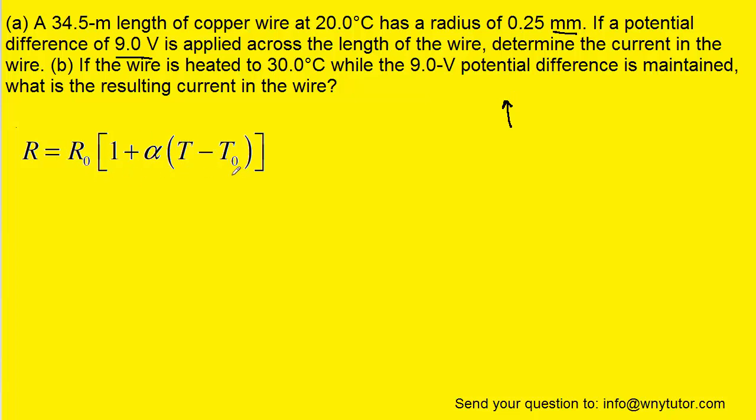So what we have to do is plug in all the known values in this particular equation in order to calculate the new resistance. Now R-naught is going to be the original resistance that we calculated earlier at 20 degrees Celsius. T-naught is a reference temperature of 20 degrees. The T will be 30 degrees.